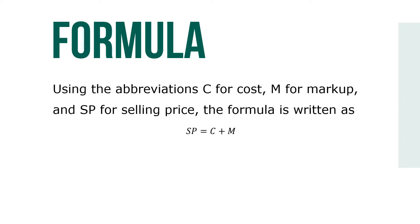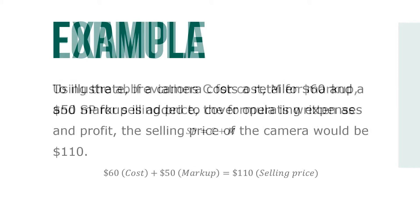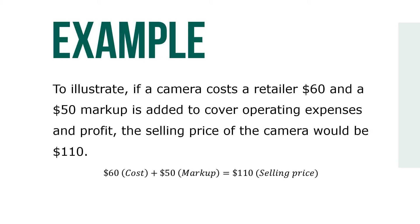Using the abbreviation C for cost, M for markup, and SP for selling price, the formula is written as SP equals C plus M. To illustrate, if a camera costs a retailer $60 and a $50 markup is added to cover operating expenses and profit, the selling price of the camera would be $110.